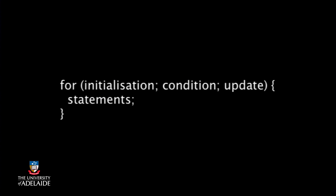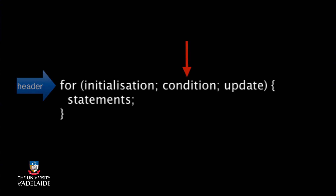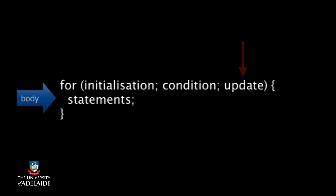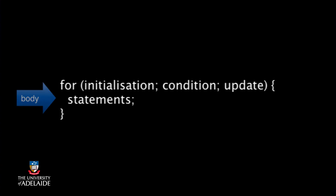Let's start by looking at the for loop again. Remember that we have the loop header, which contains the initialization section, the condition that we test against, and the update code. Inside the loop we have the body statements that are going to be executed each time we pass the test.